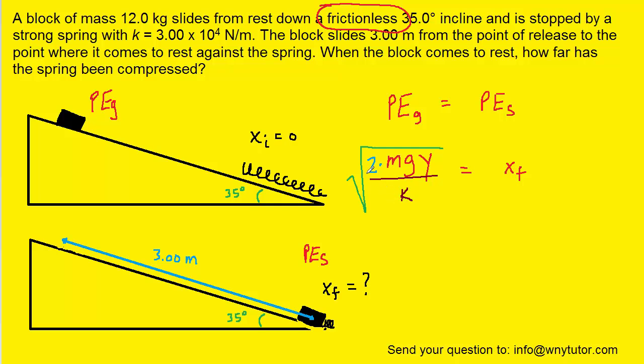Now, almost everything is known on the left side of the equation. The mass was stated as being 12 kilograms, g is 9.8, k was given in the question as well. What we need is y. Now, let's recall that y would be the height that the block is initially off of the ground.